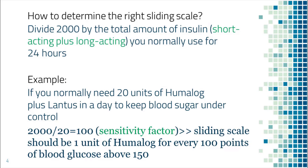For example, if you normally need to take 20 units of Humalog plus Lantus in a day to keep blood sugar under control, then divide 2000 by 20 to get 100, which is called the sensitivity factor. It means the sliding scale should be one unit of Humalog for every 100 points of blood sugar above 150.